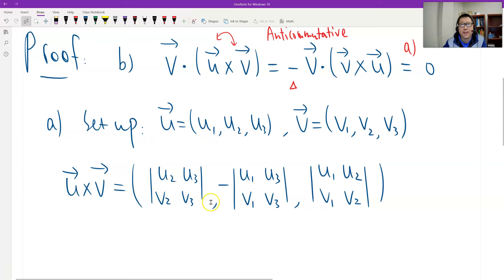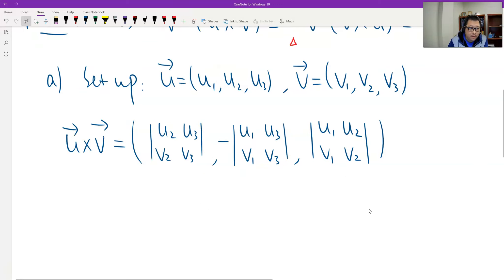This is the two-by-two determinant that we easily do the calculation. Therefore, I can find the first is u2v3 minus u3v2. The second, we have negative, therefore it's u3v1 minus u1v3. The last is u1v2 minus u2v1.